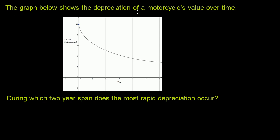The graph below shows the depreciation of a motorcycle's value over time. And they show us the graph. And they say, during which two-year span does the most rapid depreciation occur?